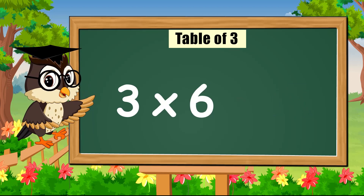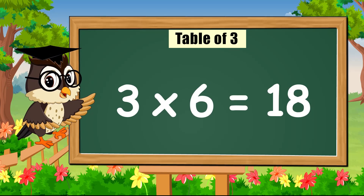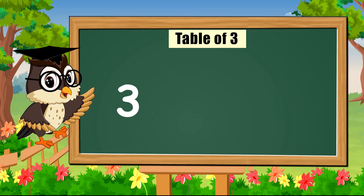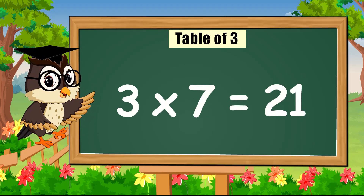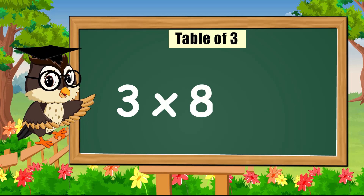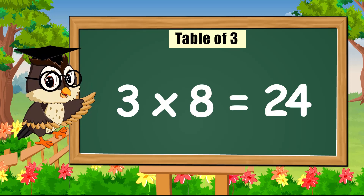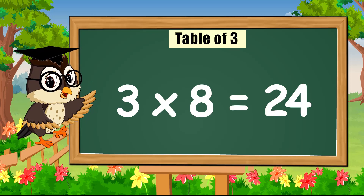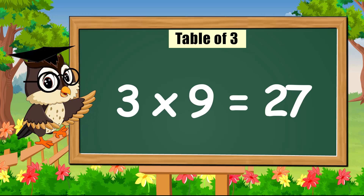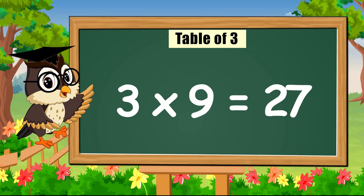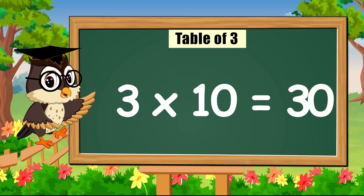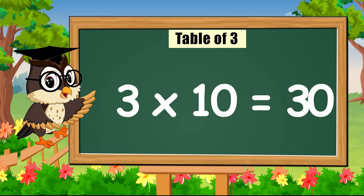Three times six is eighteen. Three times seven is twenty-one. Three times eight is twenty-four. Three times nine is twenty-seven. Three times ten is thirty.